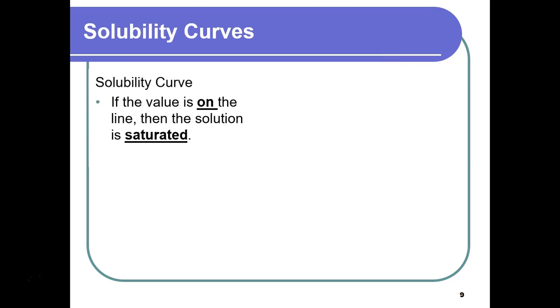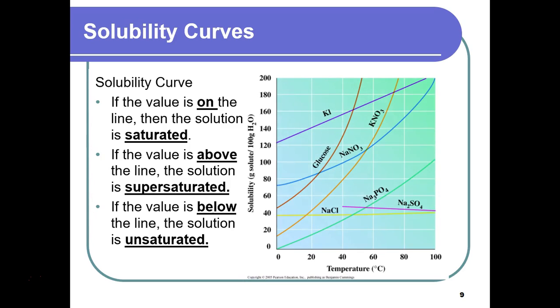Now that we've learned how to look at solubility curves in the last video, we can take saturated, supersaturated, and unsaturated solutions and figure out whether they're one of those things by looking at the graph. The way we interpret this is if the value we're looking at is in relation to the line. If it's on the line, we're going to call that a saturated solution.